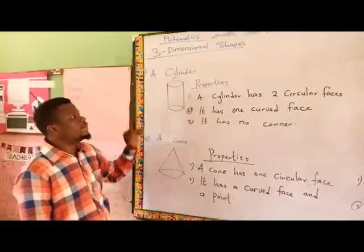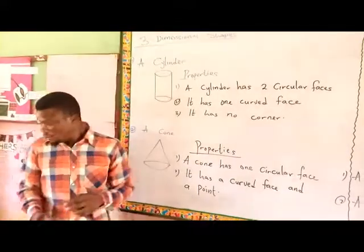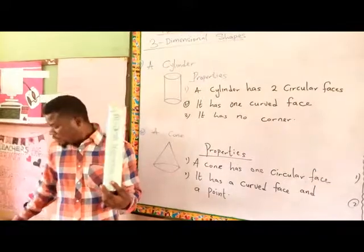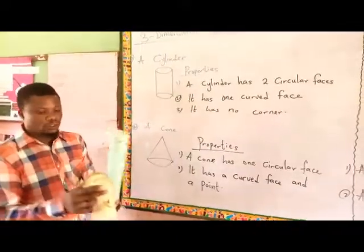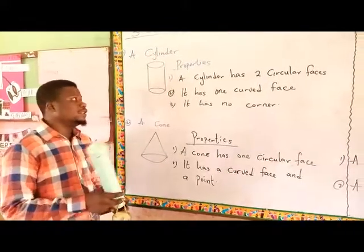A cylinder, this is the diagram of a cylinder. It looks like the bottle, just like this. This is a cylinder. You can call this one also cylinder. And even your water bottle at home, they call cylinder.